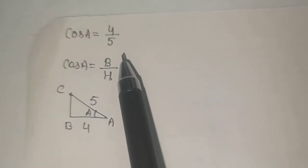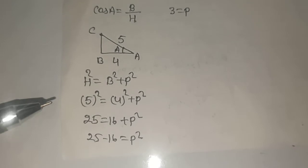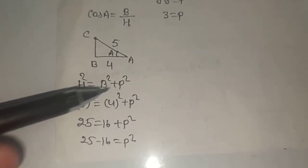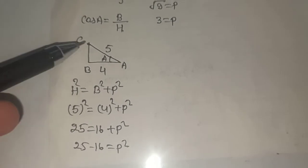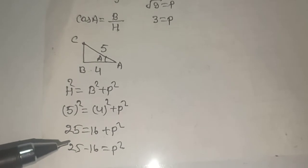With the help of Pythagoras, we will find the value of BC. By using the Pythagorean theorem, hypotenuse square equals to base square plus perpendicular square. So value of hypotenuse is 5, value of base is 4, so we will find the value of perpendicular.